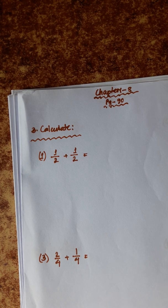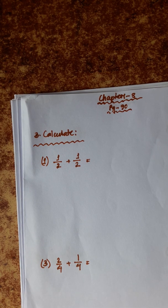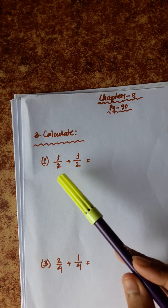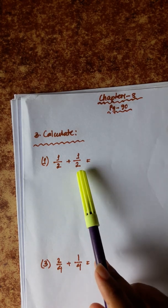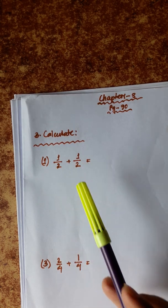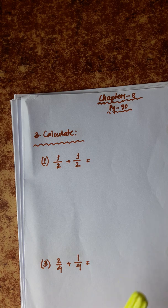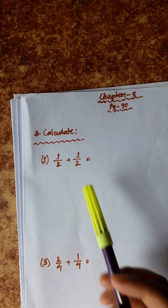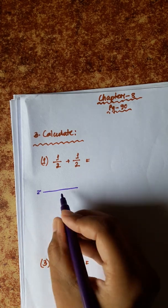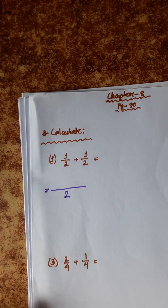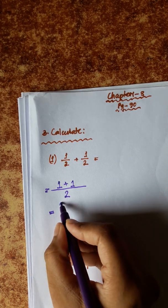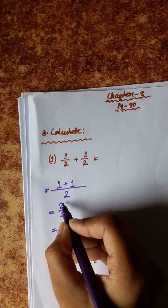Our first math is 1 divided by 2 plus 1 divided by 2. In the fraction method, first we have the numerator and denominator. The fraction number is the denominator. For fractional addition, the denominator must be the same.